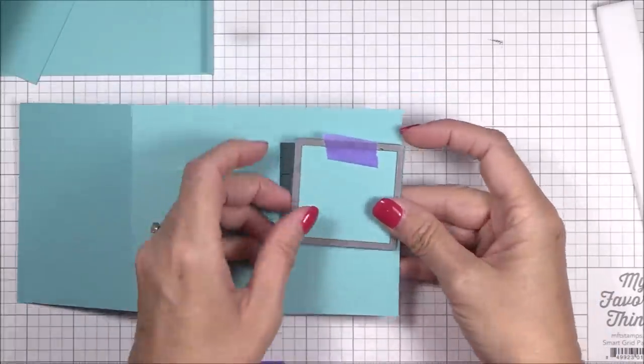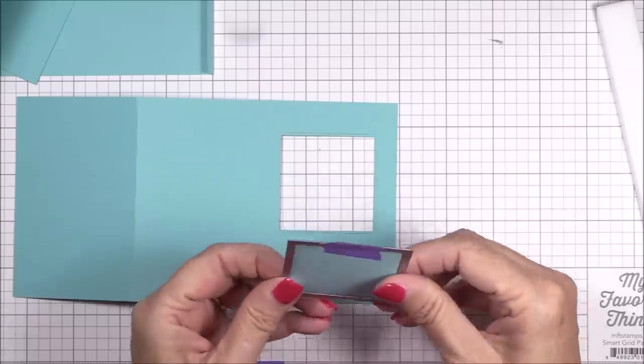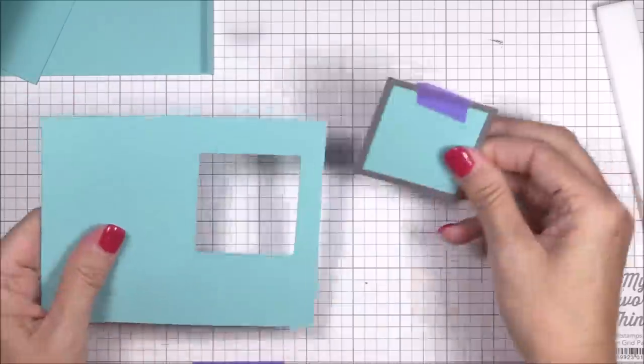I'm carefully adhering the square die to the right side of the front panel, and it's important to make sure that your aperture is cut to the right of that back flap.